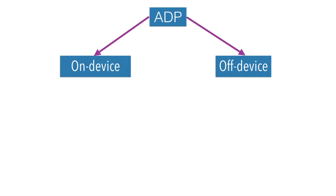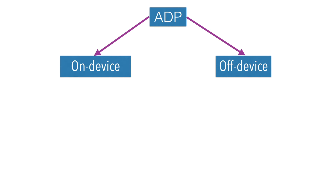Broadly speaking, Android Data Persistence can be categorized into basically two types: on-device and off-device data. Some people refer to this as offline data and online data, but I will stick to on-device and off-device because it makes it much easier to understand where the data is.